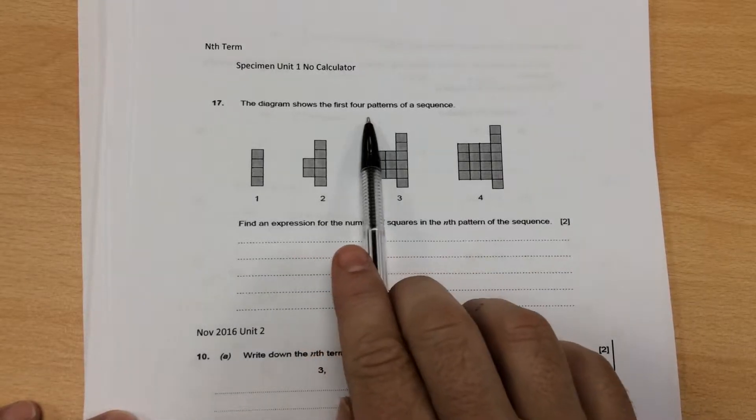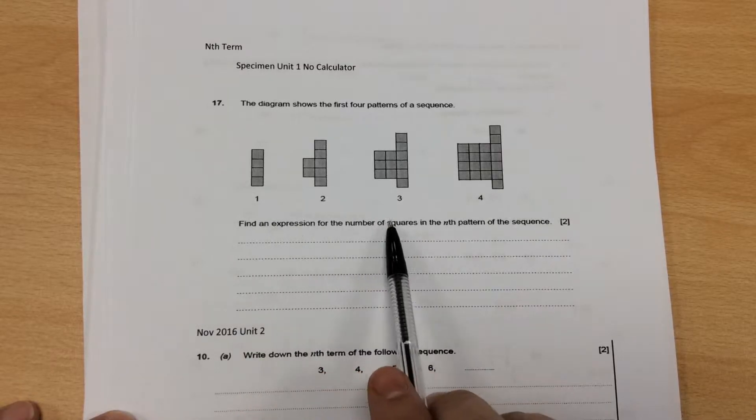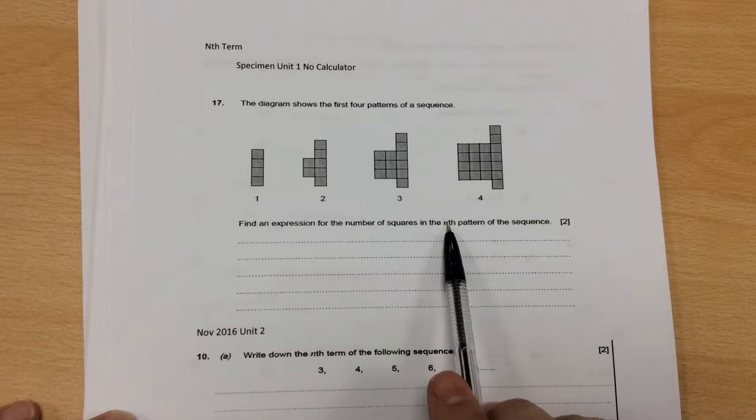Finding the nth term. The diagram shows the first four patterns of a sequence. Finding an expression for the number of squares in the nth term.